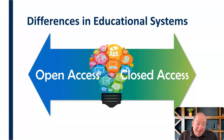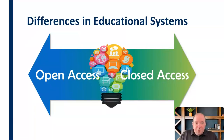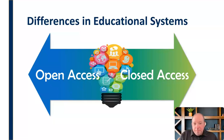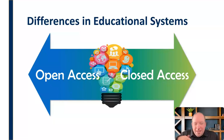Even here in the United States, at the university level, we have open access universities but also many closed access institutions — meaning they only accept certain students or a certain number of students who have demonstrated a particular level of achievement. Wherever you are, you're going to find differences in these educational systems and differences in perspectives on education.